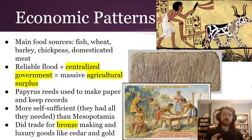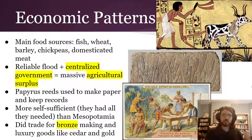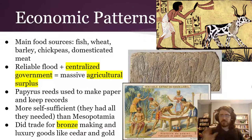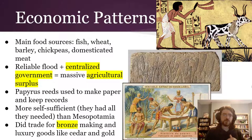Economically, their main sources of food were fish, wheat, chickpeas, and domesticated meat — cows, goats, and things like that. Because they had a reliable flood and a very centralized government, they had massive agricultural surplus. They were able to use that to trade for the few things they didn't have direct access to, like the materials needed to make bronze, cedar wood for building ships and construction, and gold and other things from further south in Africa.